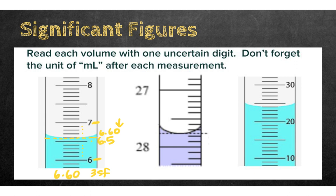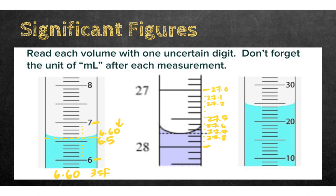For the burette example, you read from the top down instead of bottom up, but still determine intervals first. Between 28 and 27 there are 10 intervals, so each equals 0.1. Reading gives 27.0, 27.1, 27.2 and so on up to 27.8. Reading from the bottom of the meniscus between 27.7 and 27.8, the value would be 27.75 — four significant figures.